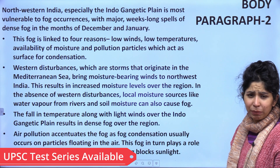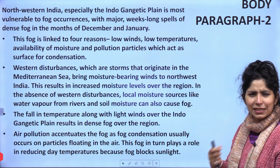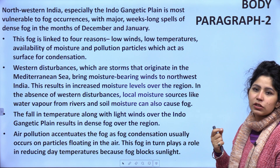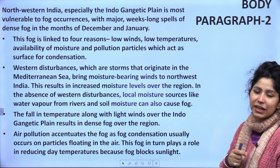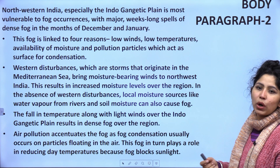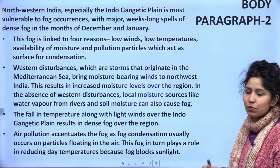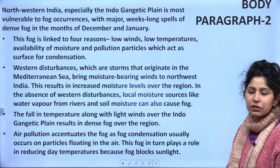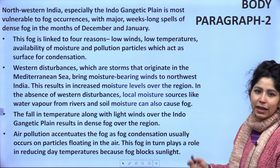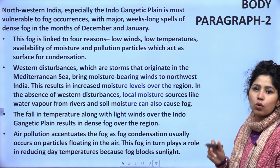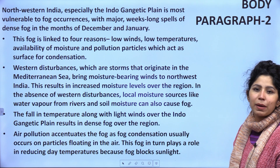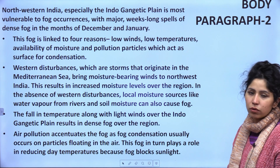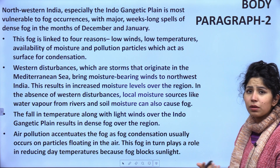Now we will explain specific factors. The first one is Western disturbances — storms that originate in the Mediterranean Sea bring moisture-bearing winds to Northwest India, resulting in increased moisture levels over the region. Even in the absence of Western disturbances, local moisture sources like water vapour from rivers and soil moisture can also cause fog. The more the moisture, the more the fog.